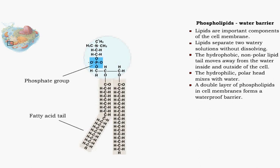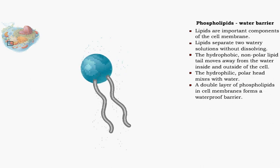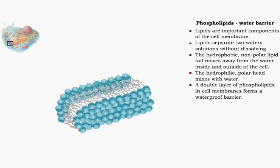The non-polar lipid end moves away from the water. It is hydrophobic, or water-hating. A bilayer of phospholipids, with their tails entwined, forms a waterproof barrier for the cell membrane.